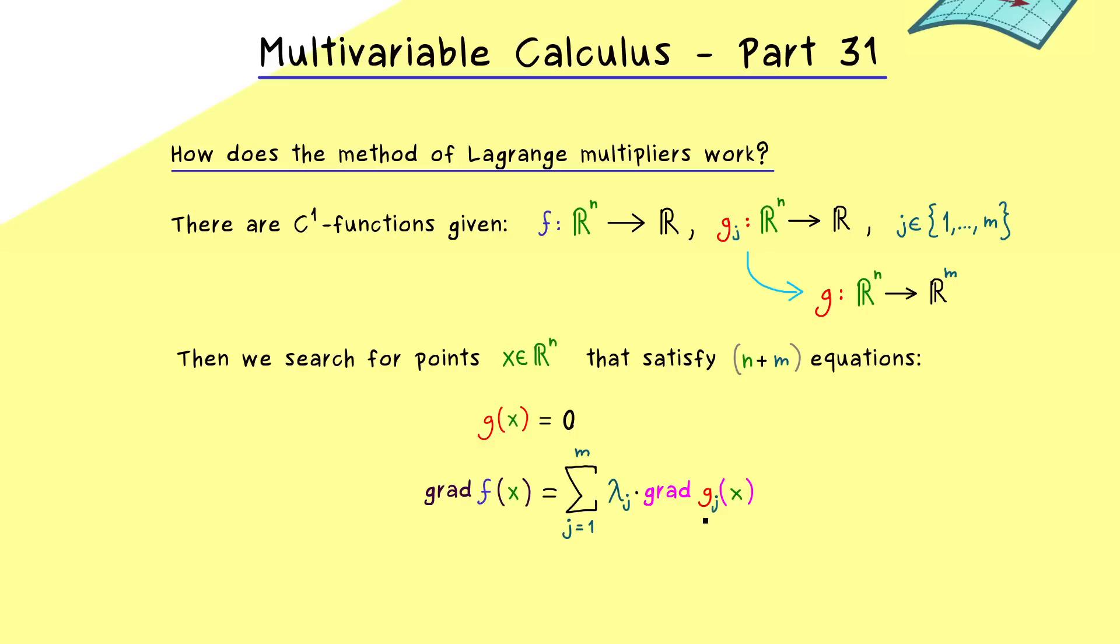Where we also find the Lagrange multipliers. And since the gradient is a vector in Rn, we have actually n equations here. And in order to satisfy these equations, we have the freedom to choose m Lagrange multipliers. And this is already the whole method, because the solutions x of these equations give us candidates for finding extrema of f under the constraint g of x is equal to zero.